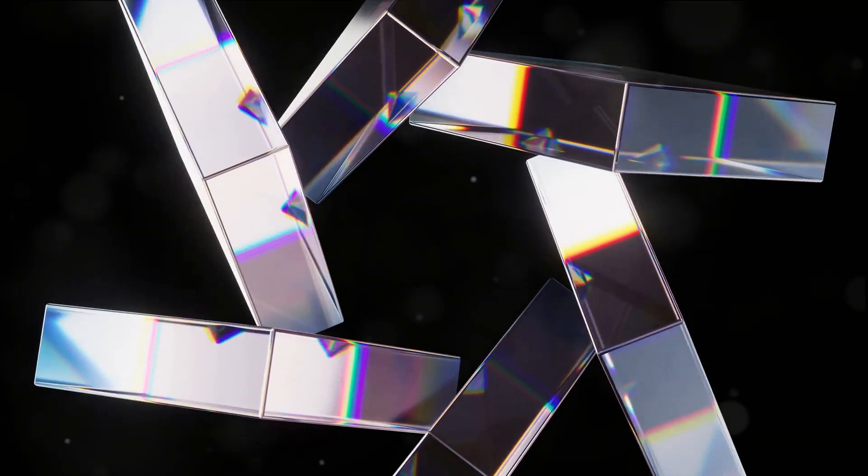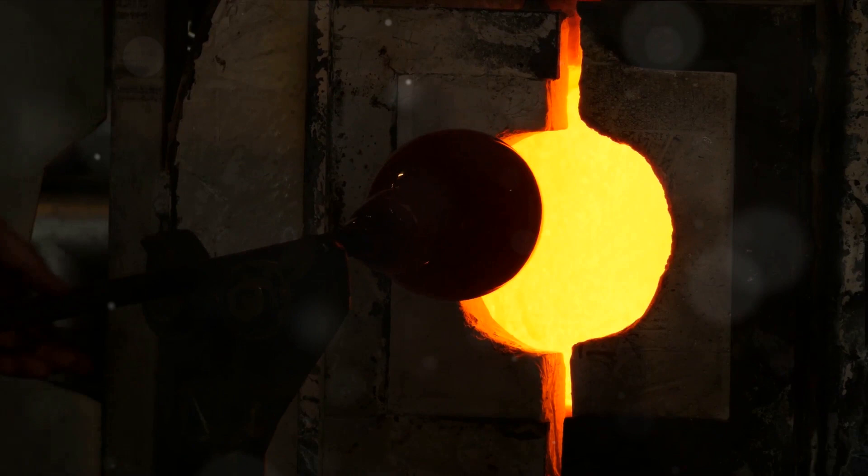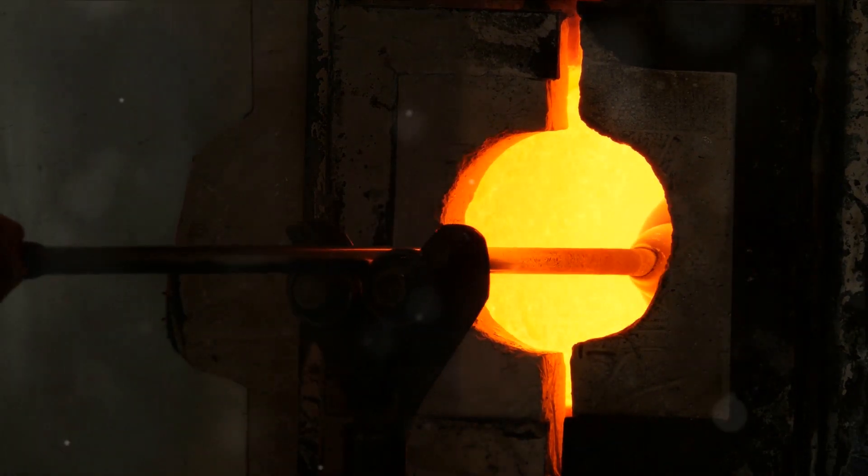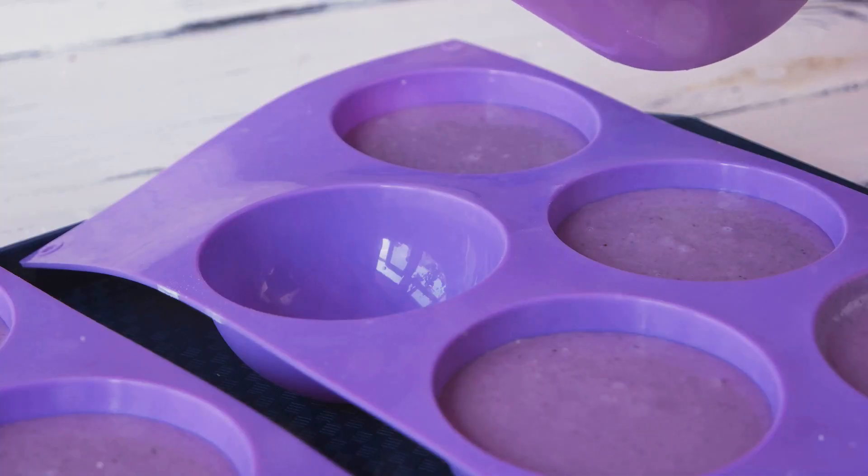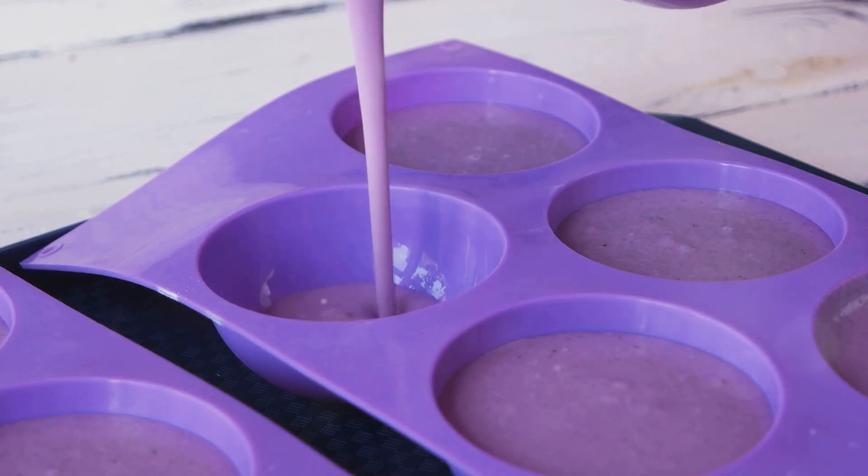Once the mixture is molten, it's time to give it some shape. This happens in a process called forming. The molten glass is poured into molds or blown into shape, much like a glassblower's pipe. It's the equivalent of pouring your cake mix into a tin before baking.